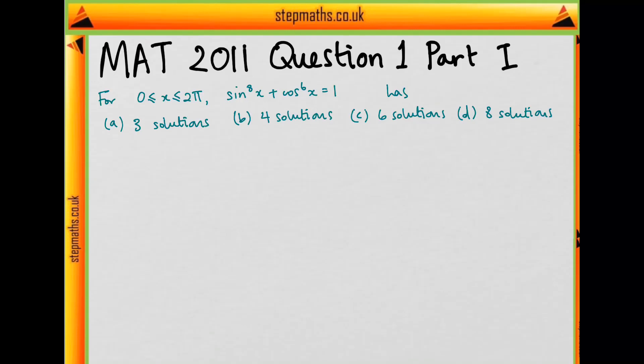Hello, in this video I'm going to go through part I of question 1 on the 2011 MAT paper. So in this question they want to know how many solutions does sin x to the power of 8 plus cos x to the power of 6 equals 1 have for x between 0 and strictly less than 2π.